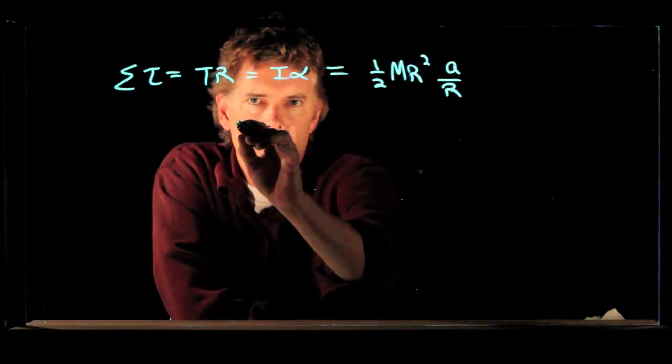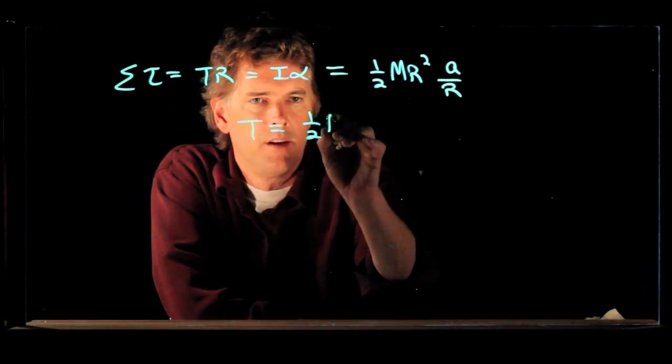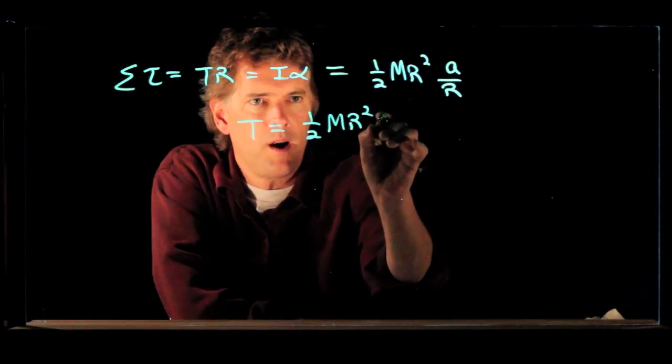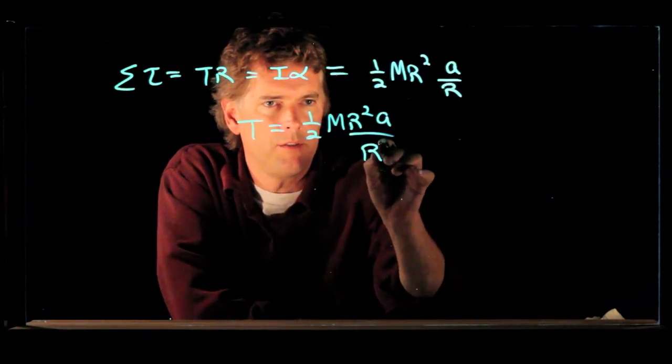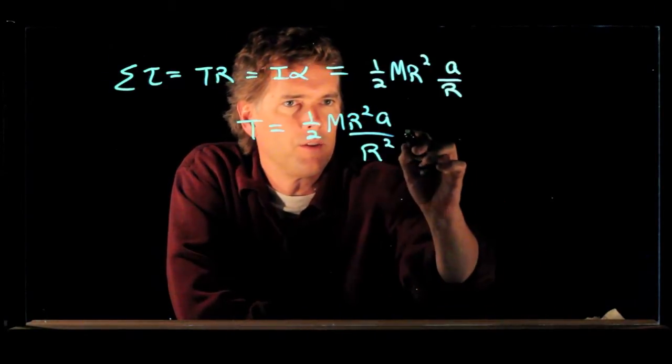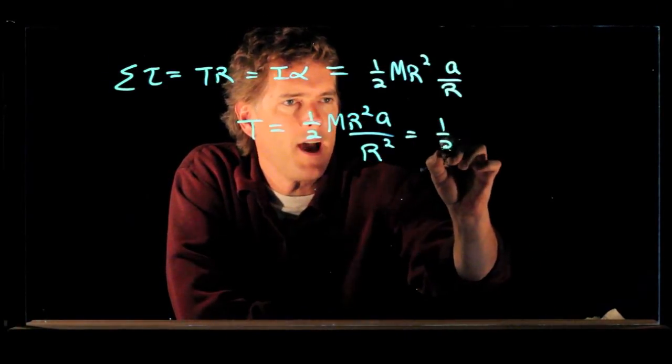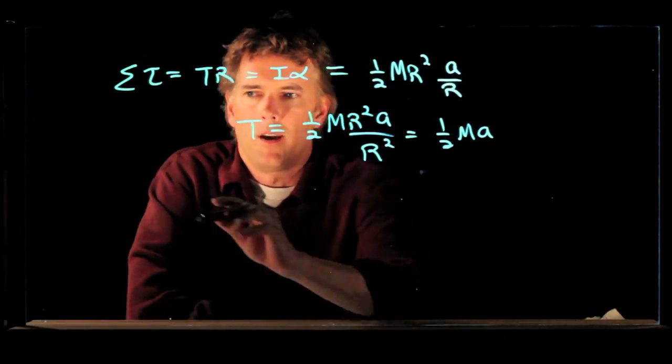So we can solve this equation for T. T is equal to one half M, R squared, A divided by—I've got to divide by another R, so I get an R squared down there. And that means that this whole thing equals one half M times A.